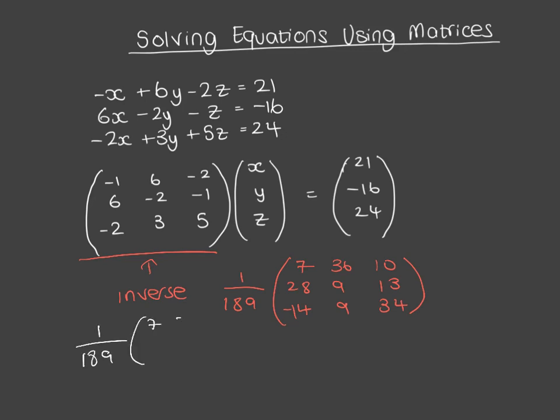You're multiplying the matrix (7, 36, 10; 28, 9, 13; -14, 9, 34) by (21, -16, 24), and you should get your final answer: (-1, 4, 2). So x = -1, y = 4, z = 2.